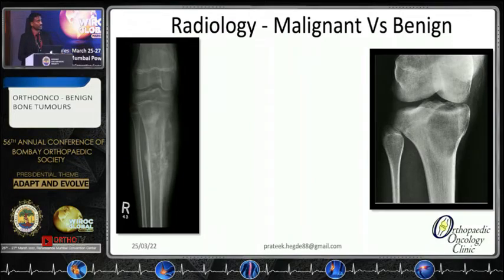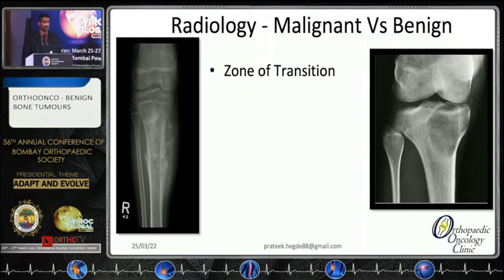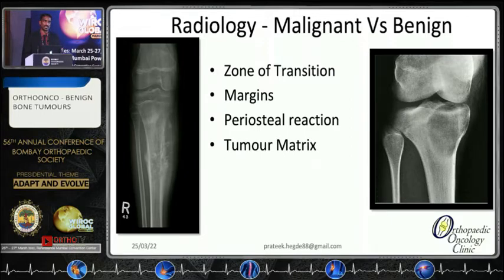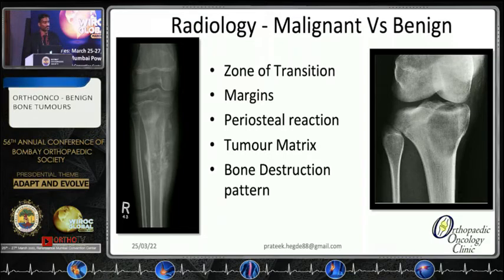It is very important to identify malignant versus benign lesions. Key points include the zone of transition — a narrow zone versus a wide zone of transition; the margins, whether very sharp, sclerotic, or diffuse; the periosteal reaction, such as aggressive patterns like sunburst or hair-on-end appearance seen on the left; the tumor matrix, whether cartilaginous or chondroid; and the bone destruction pattern, which might be permeative or moth-eaten in a malignant lesion.